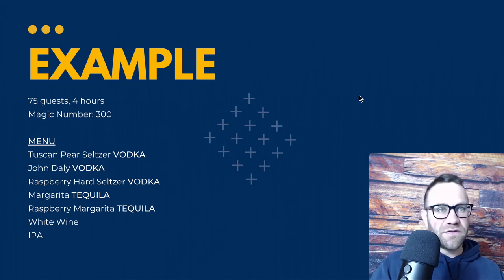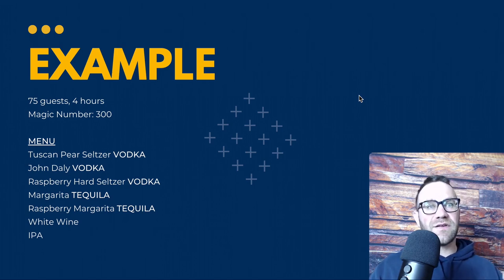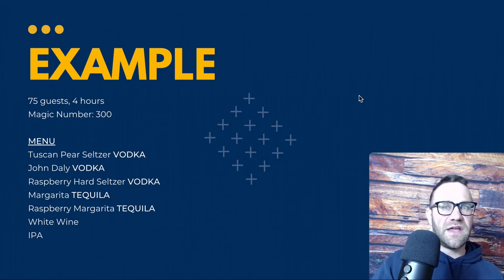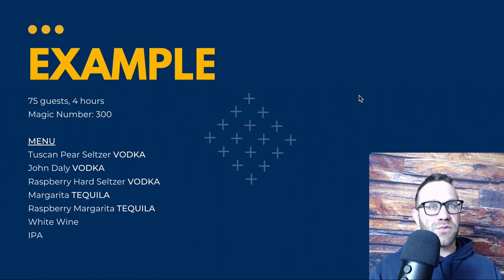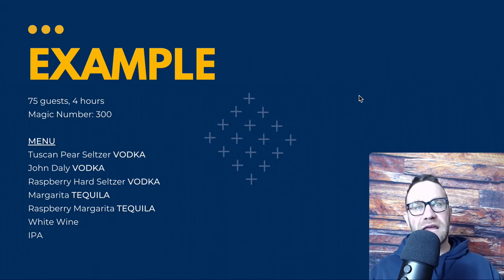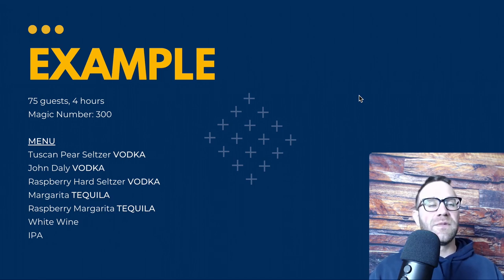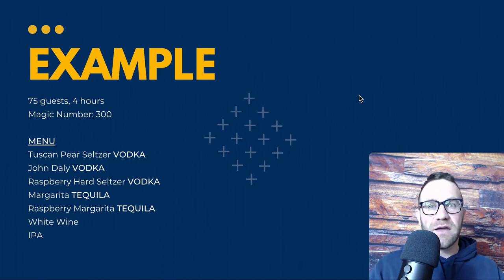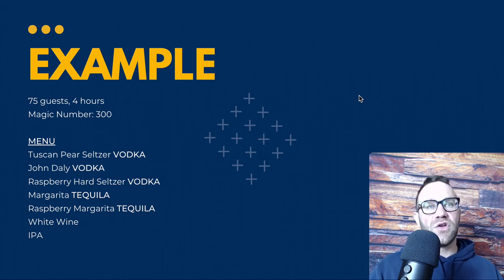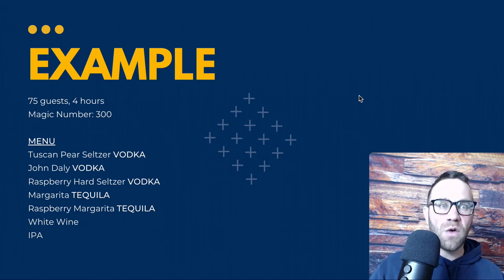The menu might include a Tuscan Pear Seltzer — muddled pear, Tito's, club soda, and a little Sprite — a John Daly Raspberry Hard Seltzer, a Raspberry Margarita, white wine, and maybe an IPA either on tap or in cans. For something of this size with these types of drinks, we usually go with the cans.